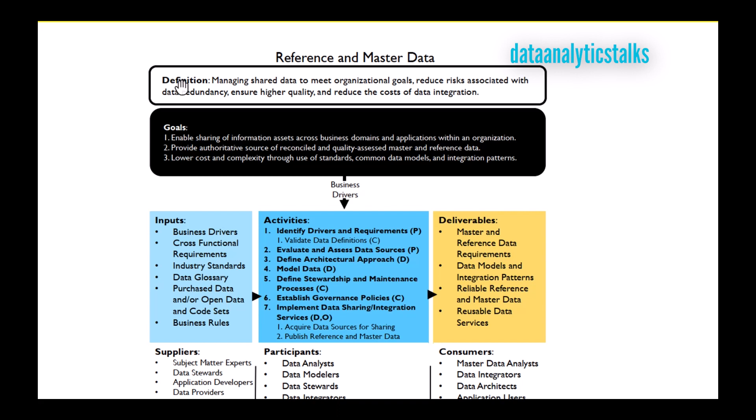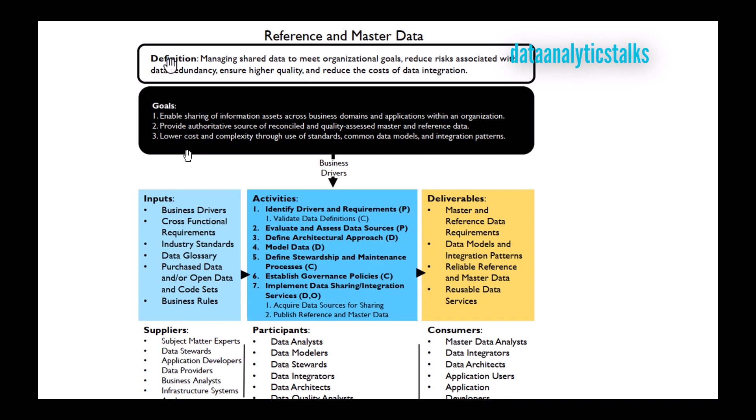Since it is shared data, this data is enabled across the organization, across business domains and applications. The second goal is providing an authoritative source of reconciled and quality master and reference data. Through the MDM process, we are reconciling and assessing the quality of master and reference data — the golden record, the best data available, the most trusted source. The third goal is lowering cost and complexity through use of standards, common data models, and integration patterns.